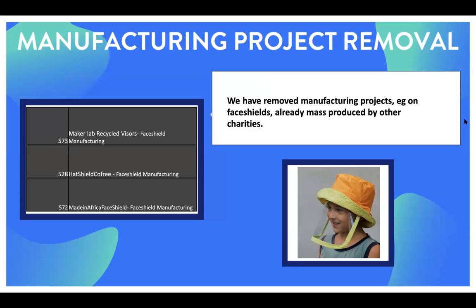Because Drogo is focused on research and development, we removed the manufacturing projects from consideration. Although the Maker Lab recycled visors and Made in Africa face shield were extremely cool projects, face shields already exist and are mass-produced, so we can't help with those — though we'd be happy to try and help anyway. This has been a rule since the very first micro grant round: we can't fund manufacturing. Our role is to focus on prototyping, explorative ideas, science, and innovation in general.